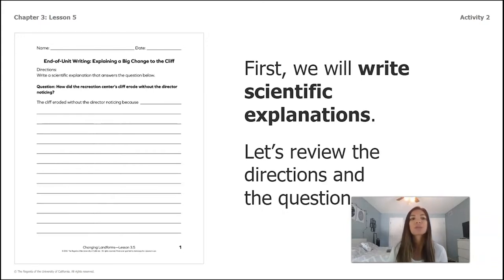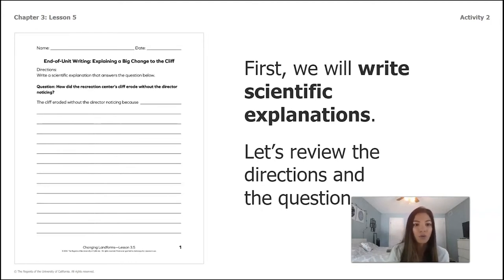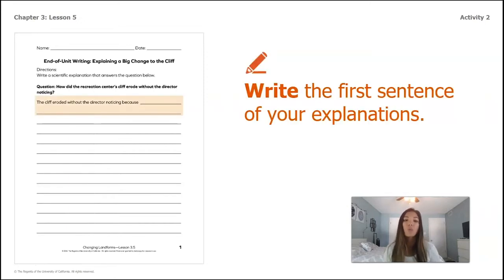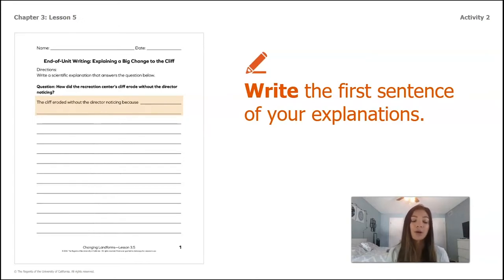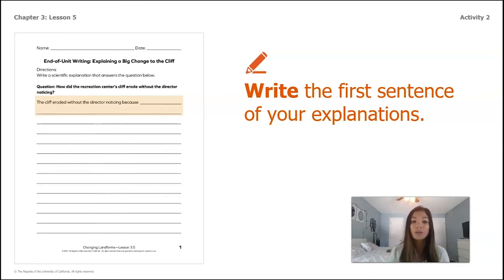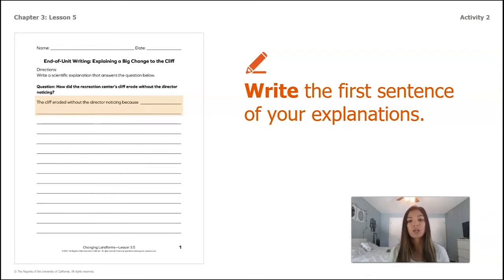We're going to review the directions and the question. The directions for our explanation are to write a scientific explanation that answers the question: how did the recreation center's cliff erode without the director noticing? We already wrote the first sentence stem for you because it's really important in a scientific explanation to write in complete sentences. The first sentence stem is: 'The cliff eroded without the director noticing because ___.' Pause the video on this slide so you can copy down that sentence stem — it's just a way to get started writing our explanation in a full sentence.